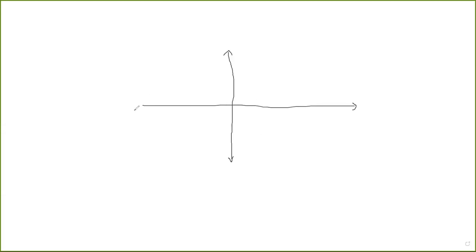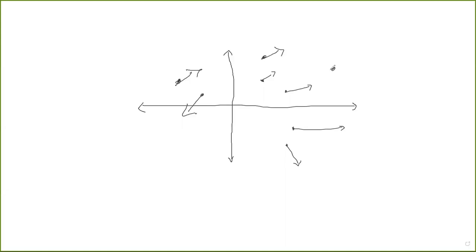The topic we're going to be talking about today is vector fields. Intuitively, a vector field is just — we draw a picture of the x and y axis, or it could be the x, y, and z axis, and at every point it assigns a vector, and you draw the vector at that point. At every point in some region in the plane, or the whole plane, you draw a vector at that point. That is the very intuitive definition of a vector field.